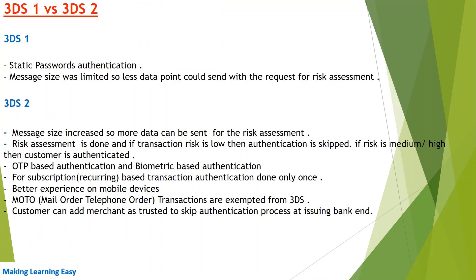In 3DS 1, static passwords were used for authentication — passwords issued by the issuing bank to the customer. Also in 3DS 1, the request message size was limited, so fewer data points could be sent with the request for risk assessment. In 3DS 2, the request message size was increased, so more data points can be sent.